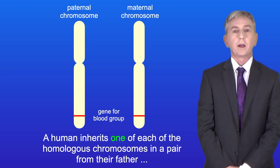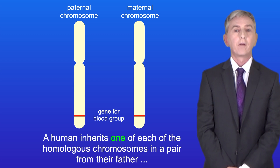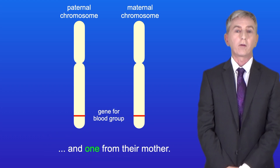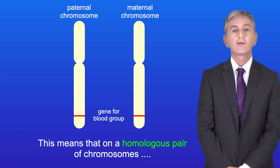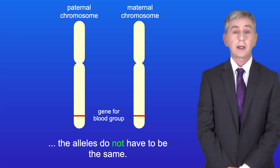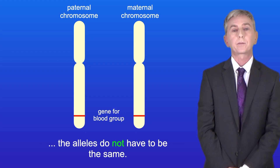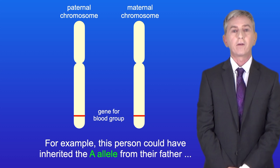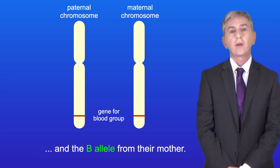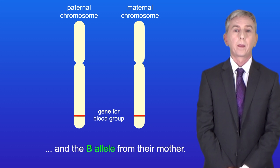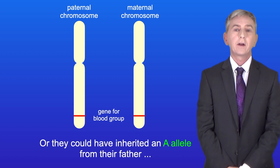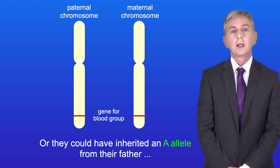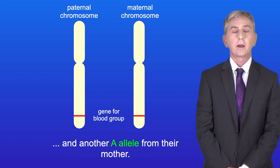A human inherits one of each of the homologous chromosomes in a pair from their father and one from their mother. This means that on a homologous pair of chromosomes the alleles do not have to be the same. For example, this person could have inherited the A allele from their father and the B allele from their mother, or they could have inherited an A allele from both parents.